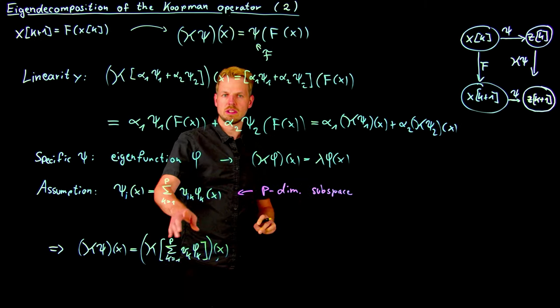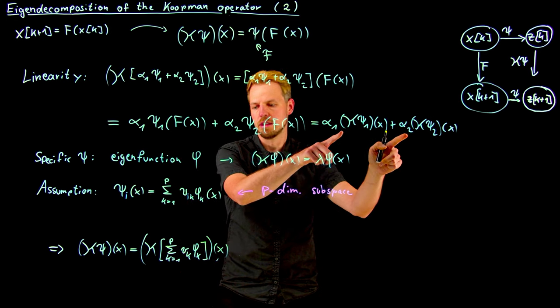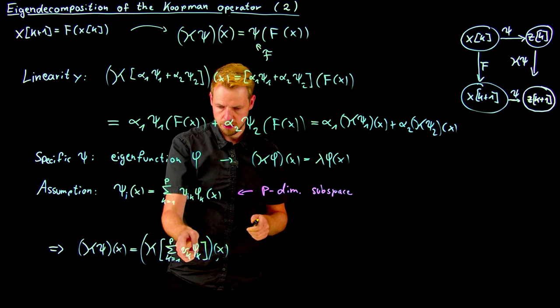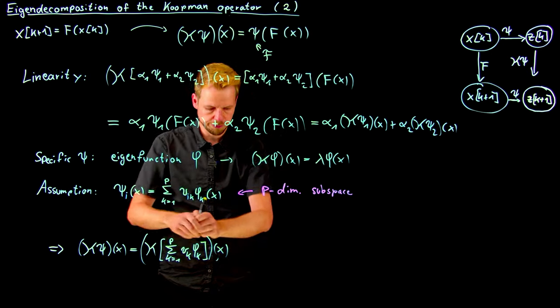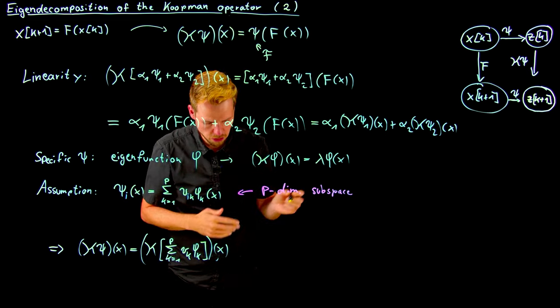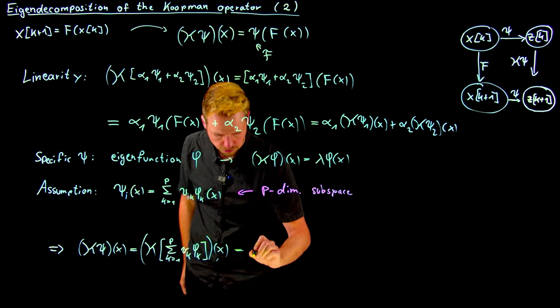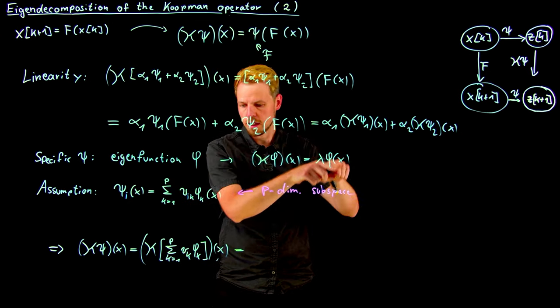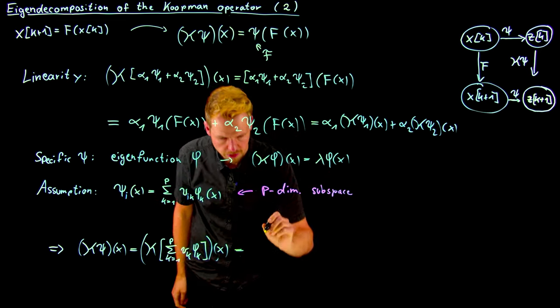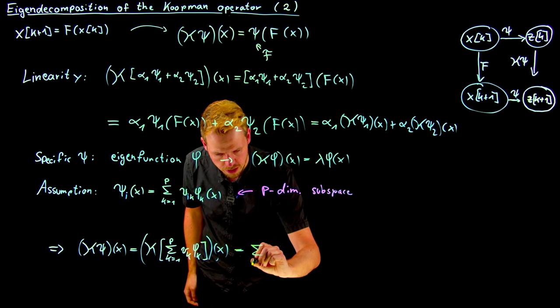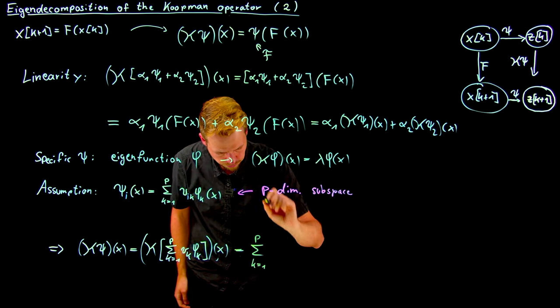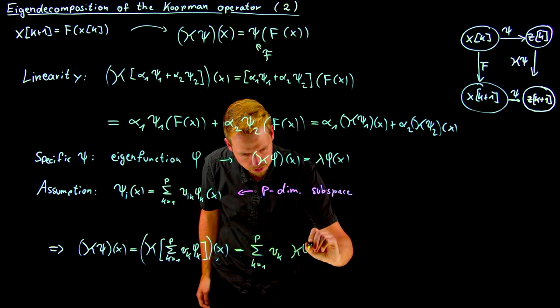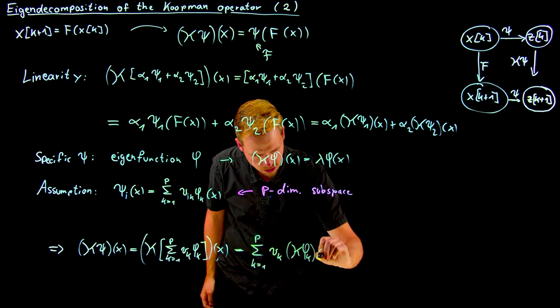And now you see what I can use is exactly this linearity. It's nothing more but a sum over more than a single one, more than two. Here it's p elements. But still, this linearity applies, obviously. And so what I can do is I can take out the sum and use the Koopman operator individually on my individual functions, which are the eigenfunctions in this case. So what I get is sum k equal 1 until p v_k times the Koopman operator K phi_k of x.